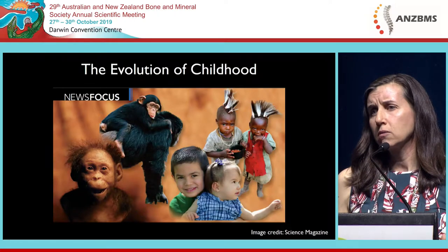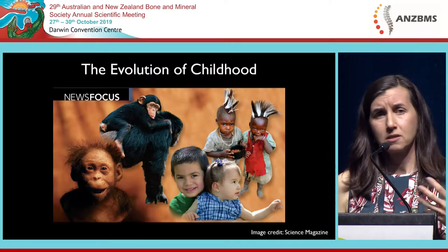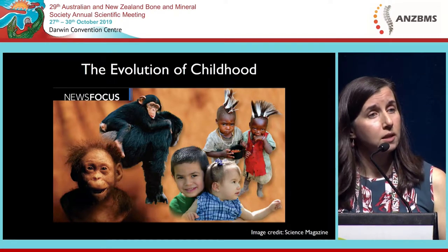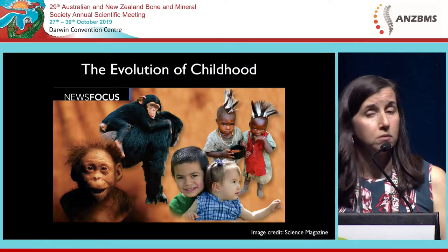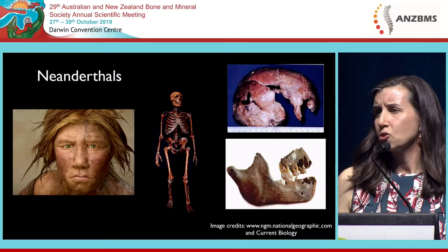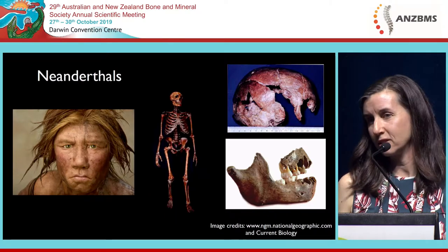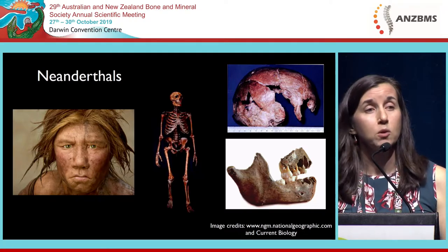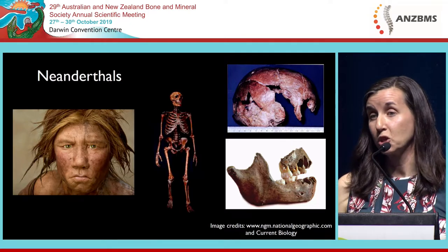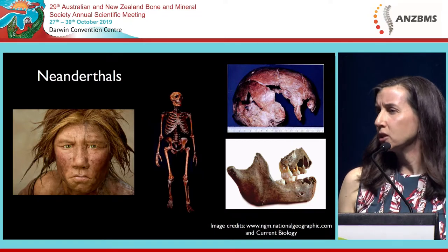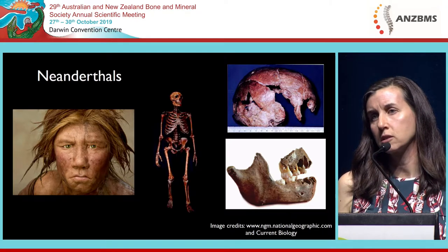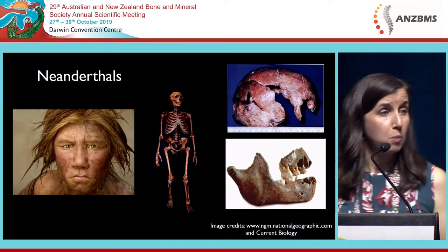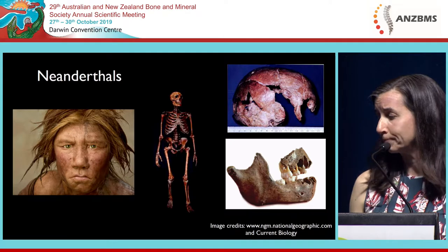I've worked specifically on looking at the evolution of human childhood, because teeth have this incredible rhythm system recording all of our early life events, as well as the speed and duration of our childhood. I've looked a lot at Neanderthals, who happen to be our closest fossil cousins. We shared a common ancestor somewhere around 700,000 years ago, we know that we've interbred with them, and they have very large brains and bodies fairly similar to us. There's been a debate for over 80 years about whether they shared a very similar pattern of growth and development to our own species.